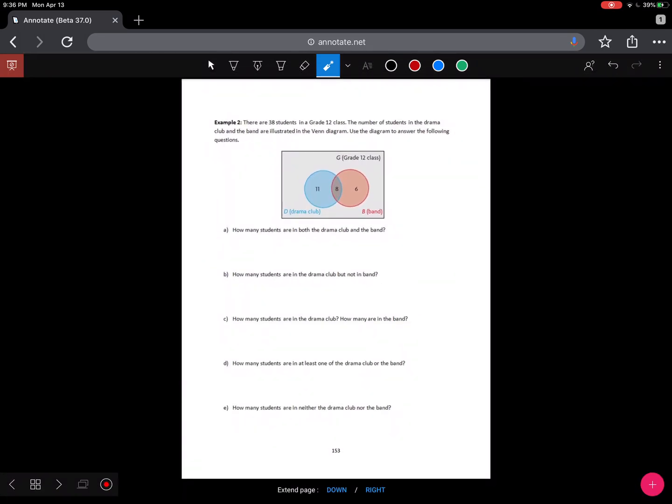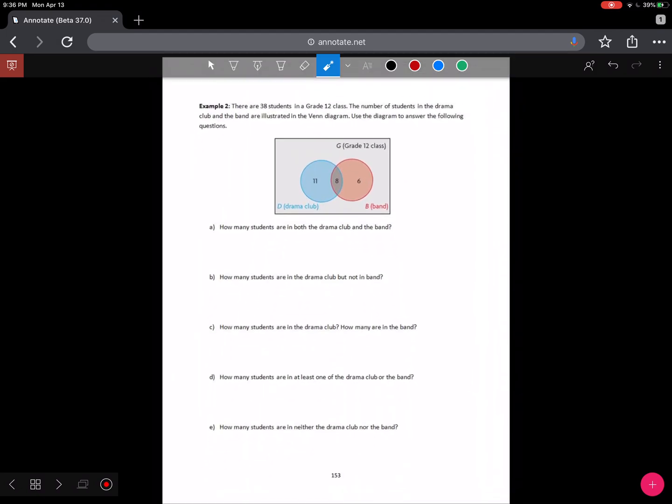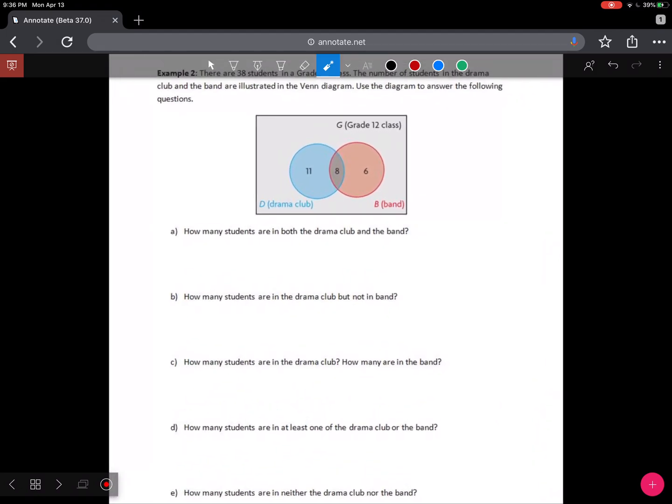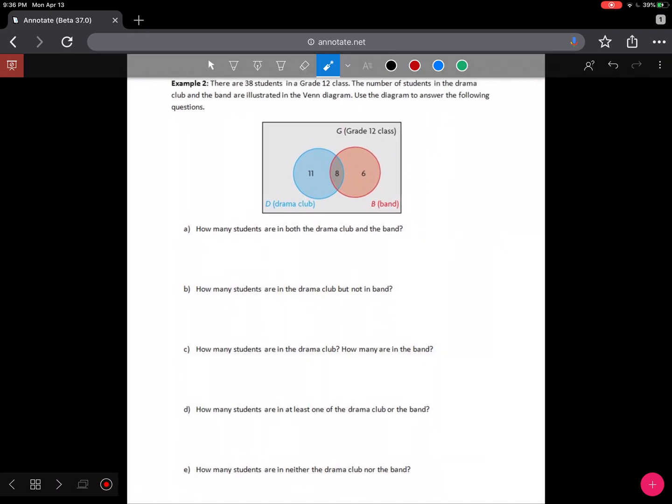So we're going to start our lesson on page 153 doing example 2. There are 38 students in a grade 12 class. That is our universe. So the rectangle is the universe. And inside that universe, we have students that are in the drama club and students that are in the band club. The number of students in the drama club and the band are illustrated in the Venn diagram. Use the diagram to answer the following questions.